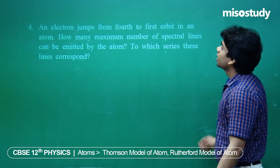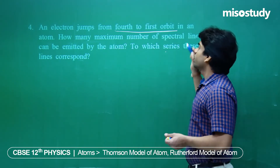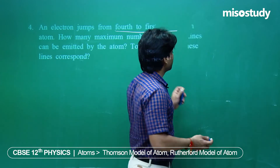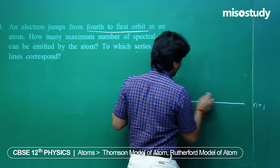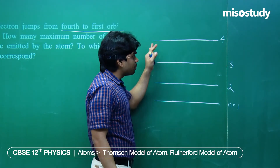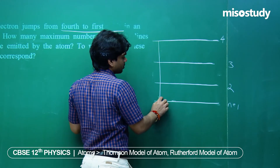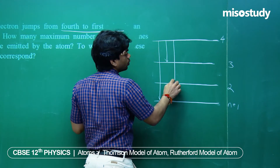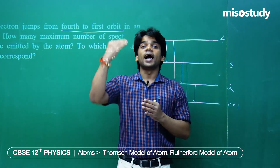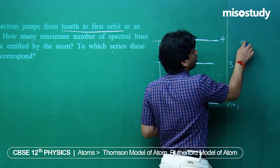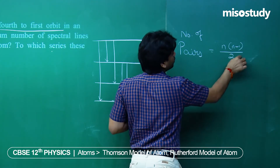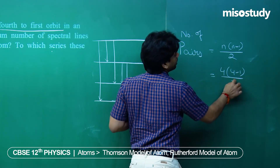Question 4 is a 2-mark question. An electron jumps from the fourth to the first orbit in an atom. How many maximum spectral lines can be emitted, and to which series do they correspond? From n = 4 to n = 1, we make all possible pairs: (4,3), (4,2), (4,1), (3,2), (3,1), (2,1) — giving 6 spectral lines. Using the formula n(n−1)/2 = 4×3/2 = 6.